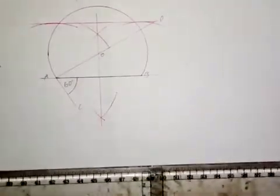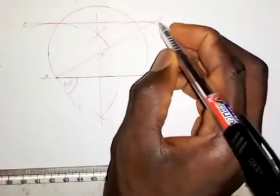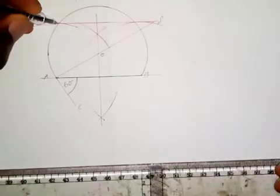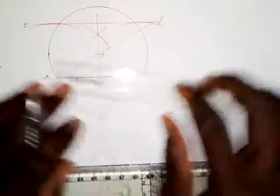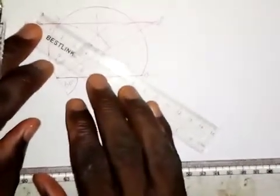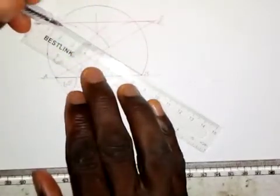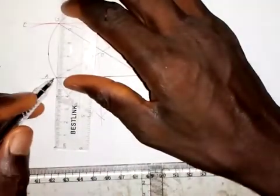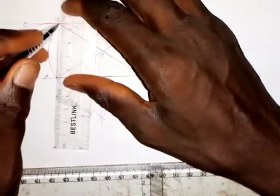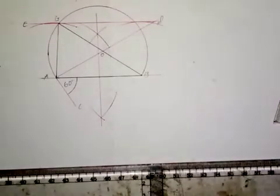This line I will call line EF. Line EF touches the circle at a point, which I'll call point G. I will join B and G together with a straight line, and also join A and G together with a straight line. So the required triangle is triangle ABG, whose base, vertical angle, and altitude are given. It's as simple as that.